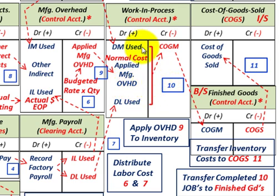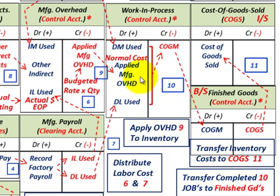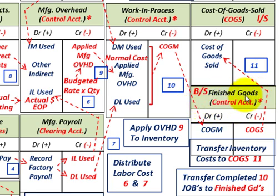For step ten, we add up whatever jobs were completed — direct materials used, applied manufacturing overhead, and direct labor used — and transfer them to finished goods. We credit the work-in-process control account for the cost of goods manufactured, and that amount is debited to the finished goods account, another control account. Everything up until this point is sitting on the balance sheet.